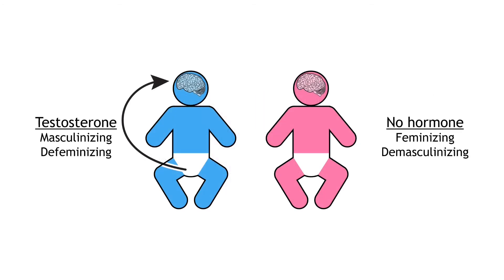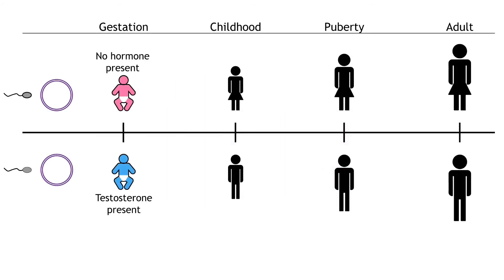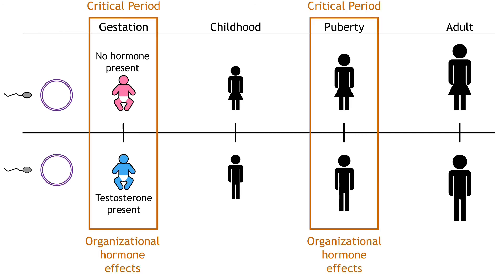In addition to differentiating the reproductive duct system, the presence or absence of gonadal hormones during development also differentiates the rest of the body, including the brain. Testosterone causes the brain, body, and behavior of the individual to be masculinized and defeminized. The quiescent ovaries do not release hormones, which causes the brain, body, and behavior of the individual to be feminized and demasculinized. These hormonal effects of secreted testosterone on the brain must take place during a specific time in development called a critical period. This early role of testosterone is called an organizational effect and results in a permanent change in the nervous system and therefore behavior.